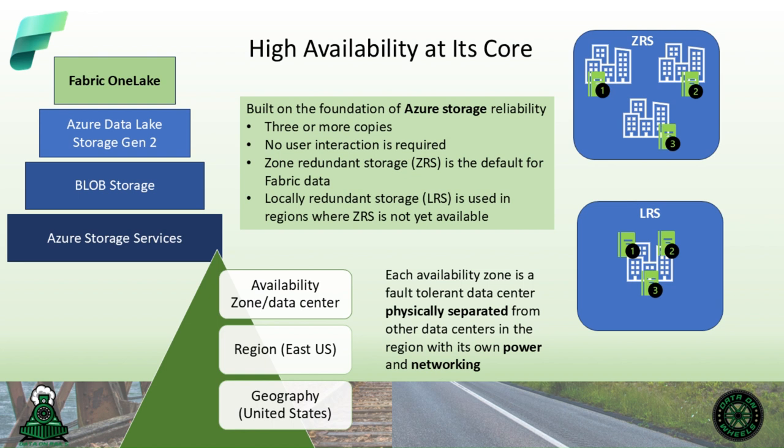One of the great things about using this functionality is that it does not require user intervention, and you would typically never know if anything happened. What does this mean for you with Fabric? Fabric OneLake is built on Azure Data Lake Gen 2, which is an extension of Blob Storage, which is built on Azure Storage Services. Because Fabric is built on the underlying infrastructure of a truly reliable and highly available storage solution in Azure, you get the benefit of this infrastructure by default and without any extra effort on your part. At the end of the day, you should be confident in the highly available storage of your data in Fabric because of Azure.